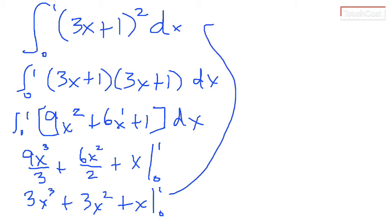9x squared plus 6x plus 1. I'm going to evaluate 3x cubed plus 3x squared plus x when x equals 1, is going to be 3 plus 3 plus 1 minus, don't forget those brackets, this is going to be 0 plus 0 plus 0. So 3 plus 3 is 6 plus 1 is 7 minus 0.